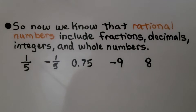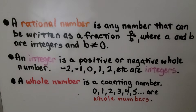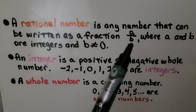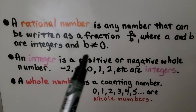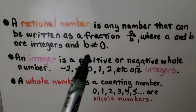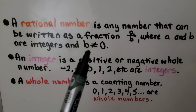From what we learned in the previous video, 3.1a, we now know that rational numbers include fractions, decimals, integers, and whole numbers. A rational number is any number that can be written as a fraction, a over b, where a and b are integers and b is not equal to 0.